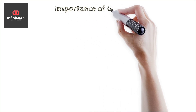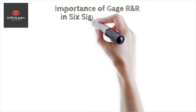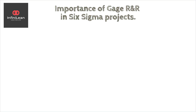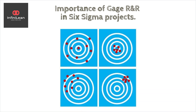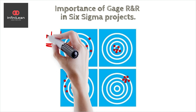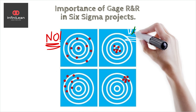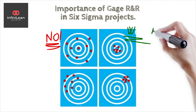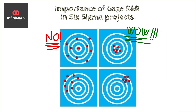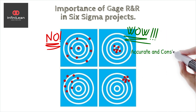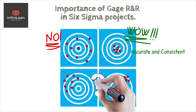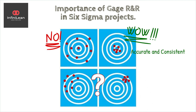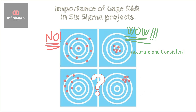Why is this important in Six Sigma? Well, reliable data is the backbone of any Six Sigma project. Without understanding measurement system variation, you risk making incorrect decisions based on faulty data. A good Gauge R&R study helps ensure that when you make process improvements, they are founded on accurate and consistent measurements.